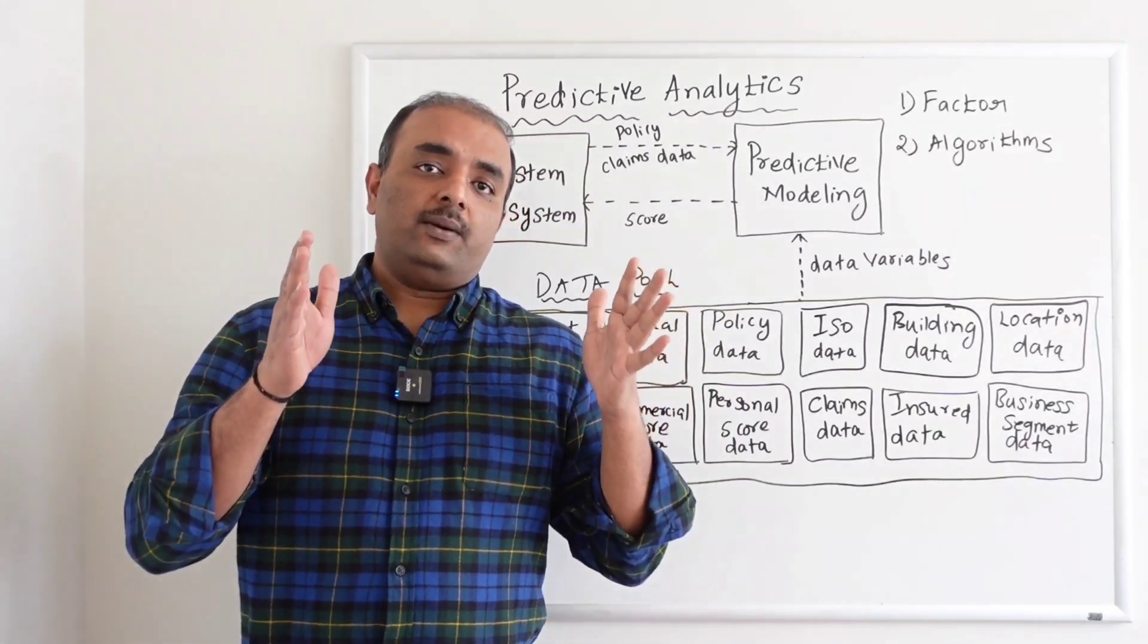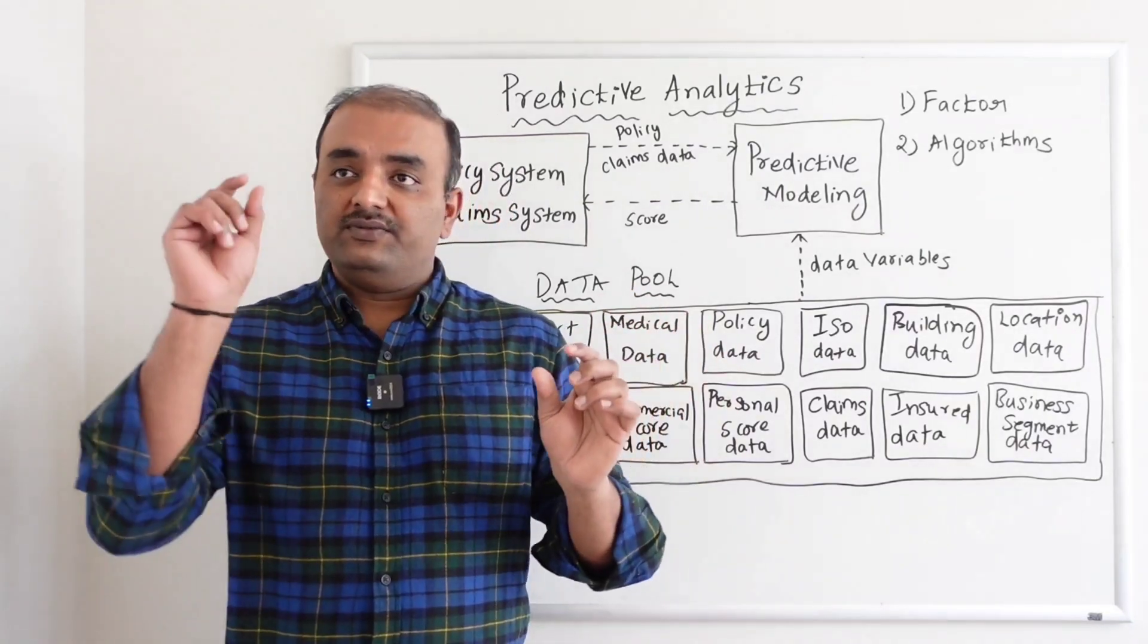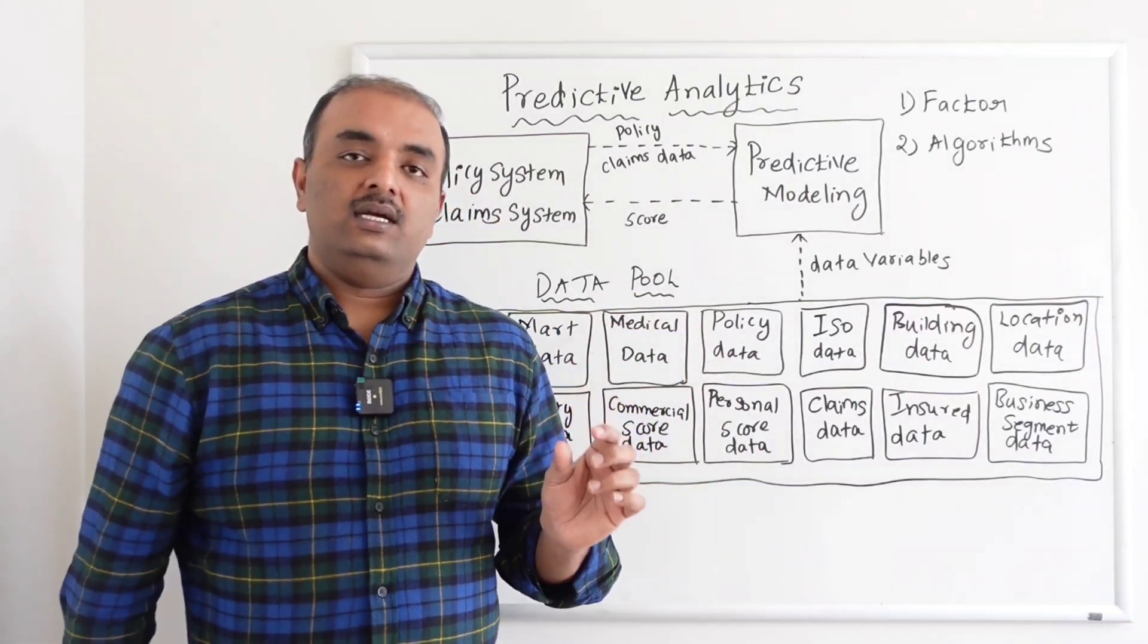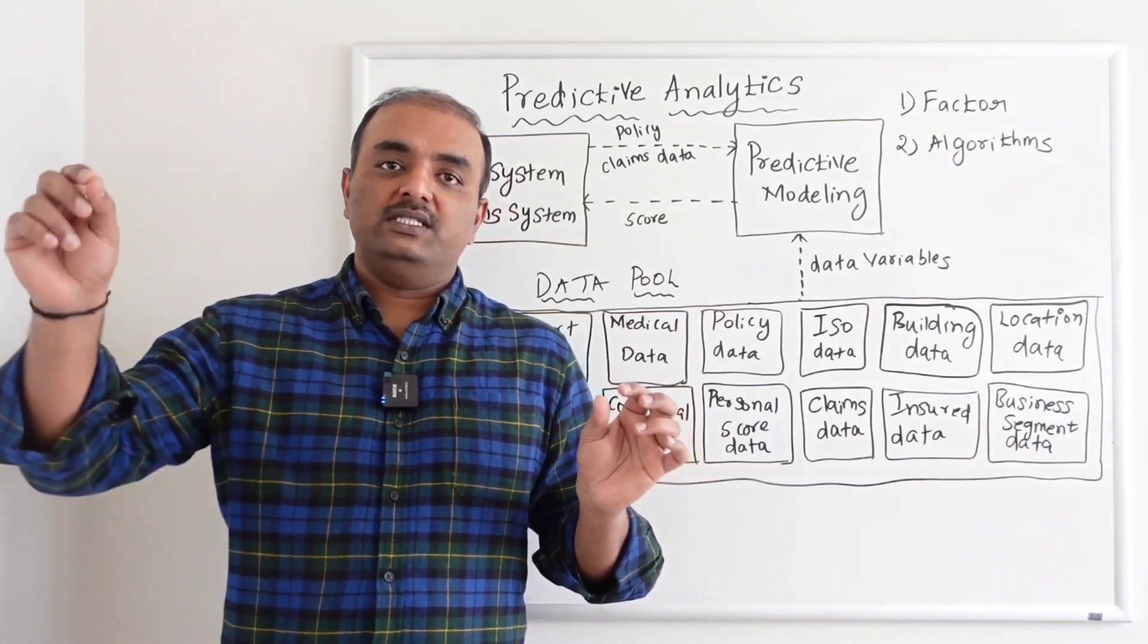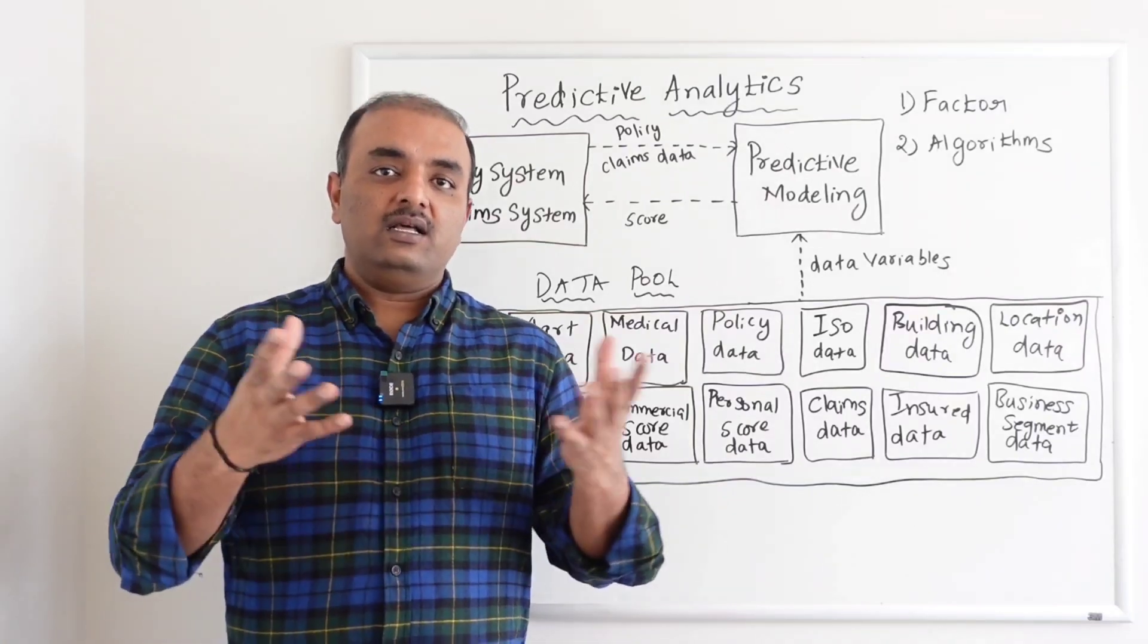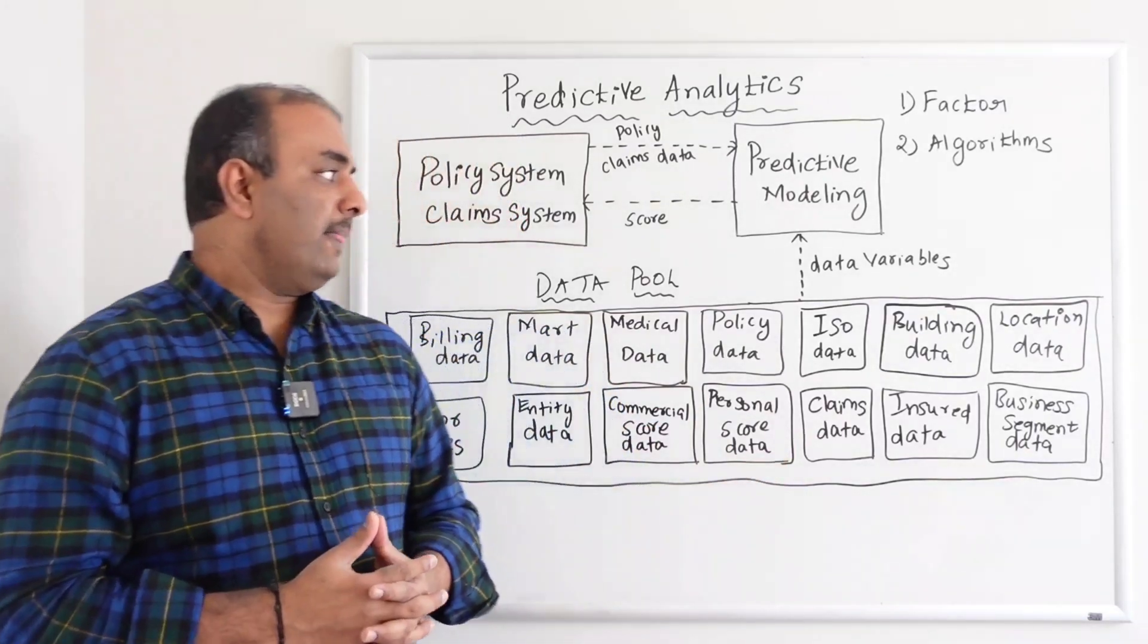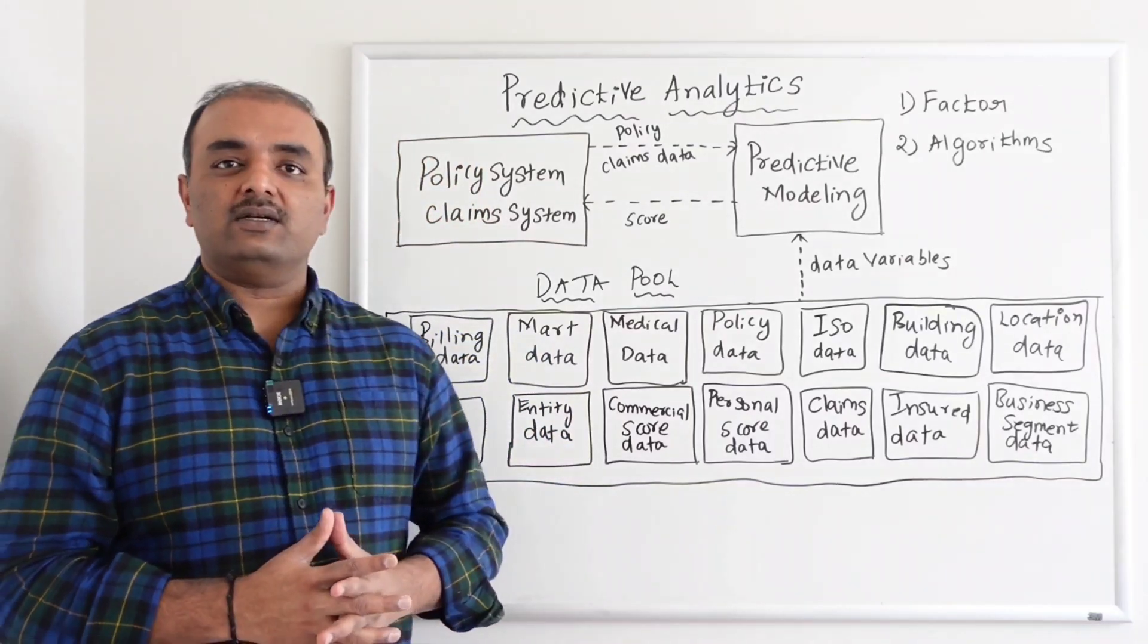So if I have a scenario where I say if this number of medical claims is between one to five, give this factor of 0.05. If it's between five to ten, give this factor of 0.010. Then use this factor, multiply by the required algorithm, which will give you the finalized score.